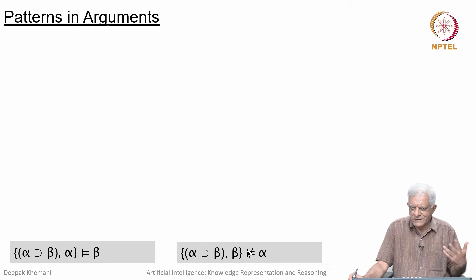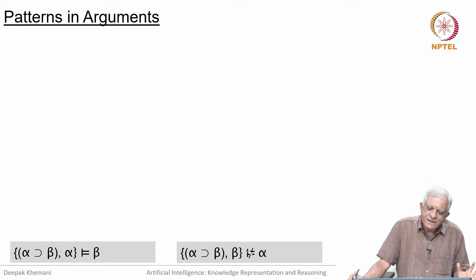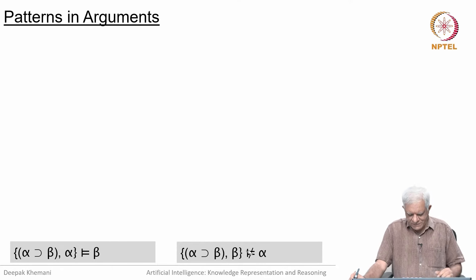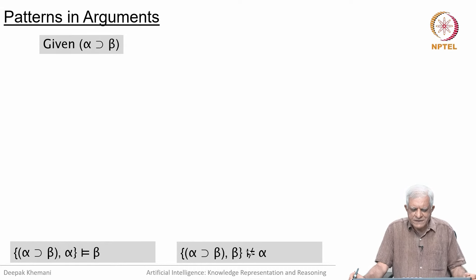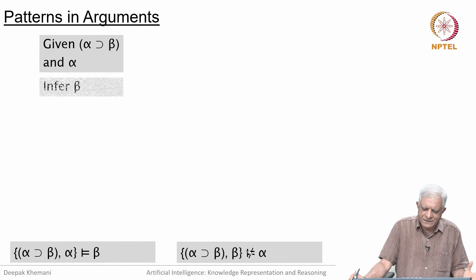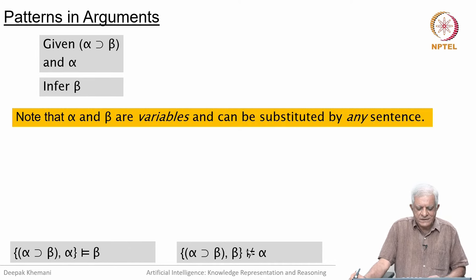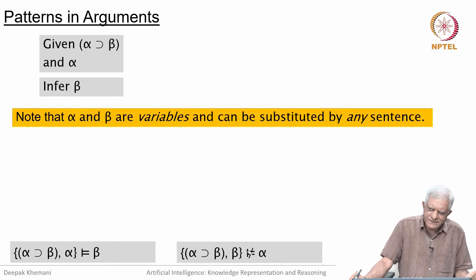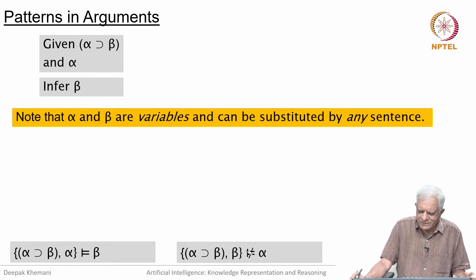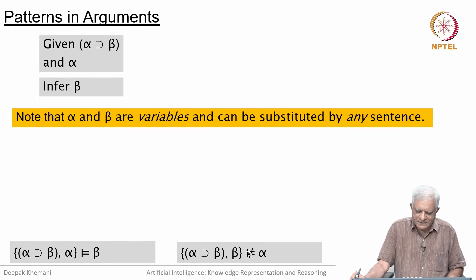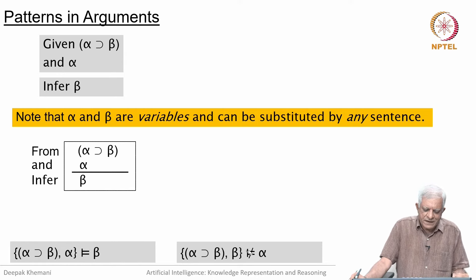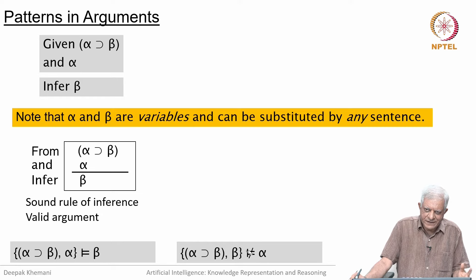X could be man, city, or politician — it does not matter; there was a pattern. Syllogism was a pattern. We want to find patterns now in this more modern logical language we are working with. The pattern is: you give us alpha implies beta and you give us alpha, and we can infer beta. Note that alpha and beta are variables in the sense that you can plug in any sentence — compound or primitive.